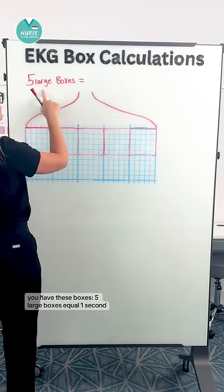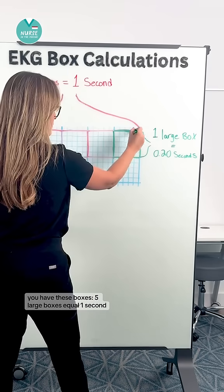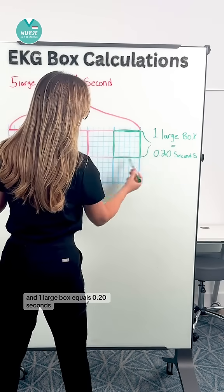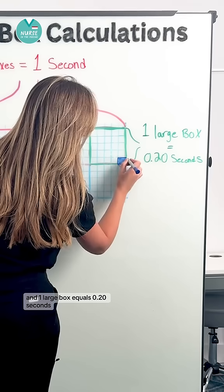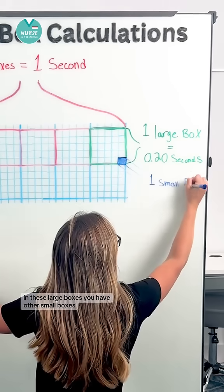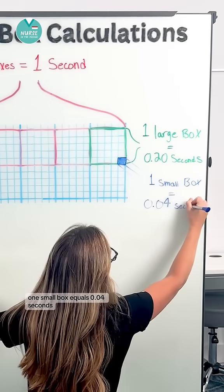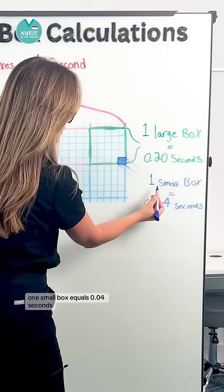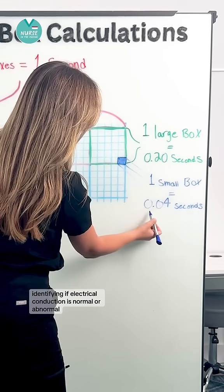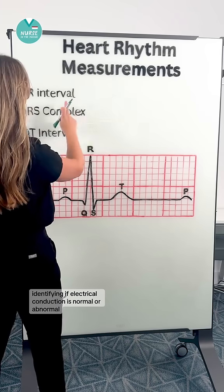If you look close, you have these boxes. Five large boxes equal one second, and one large box equals 0.20 seconds. In these large boxes, you have other small boxes. One small box equals 0.04 seconds. The timing is essentially identifying if electrical conduction is normal or abnormal.